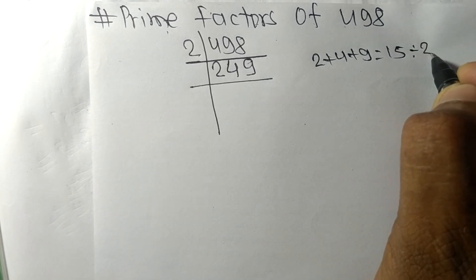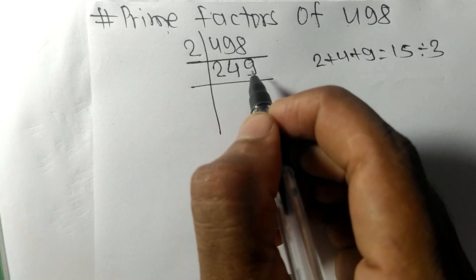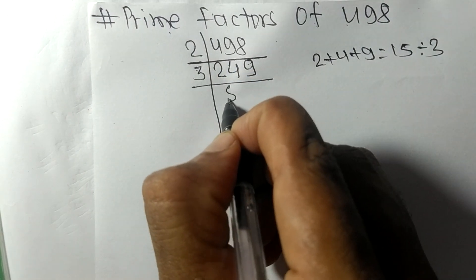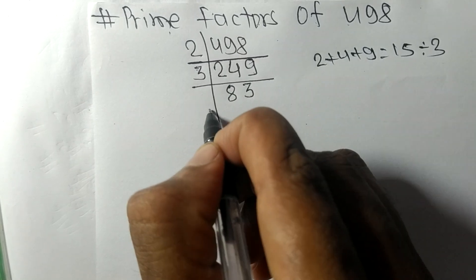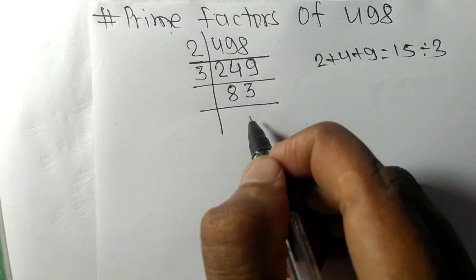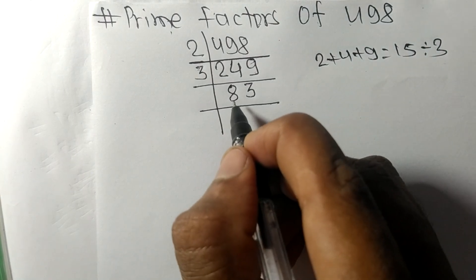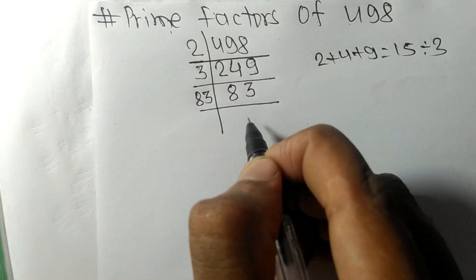exactly divisible by 3, so 249 is also divisible by 3. 3 times 8 means 24, 3 times 3 means 9. Now we got here 83, which is our prime number, so it is divisible by 83 itself and we